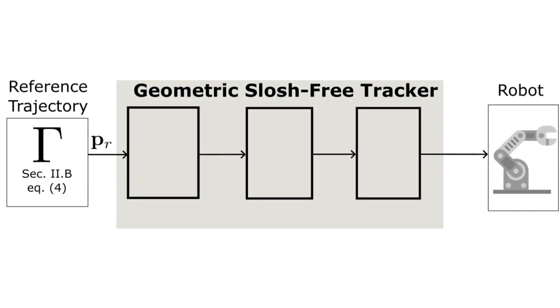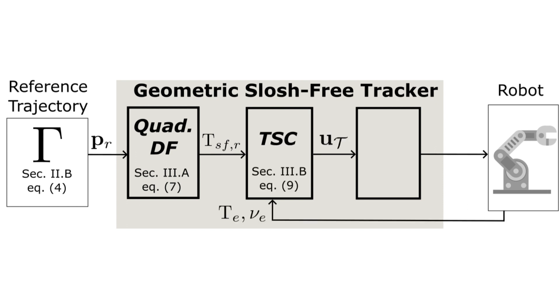The presented solution is decoupled on three stages. First, we use the quadrotor's differential flatness to compute a slosh-free translation and orientation reference. Second, we implement a cascaded proportional derivative controller to track the desired reference in the task space.